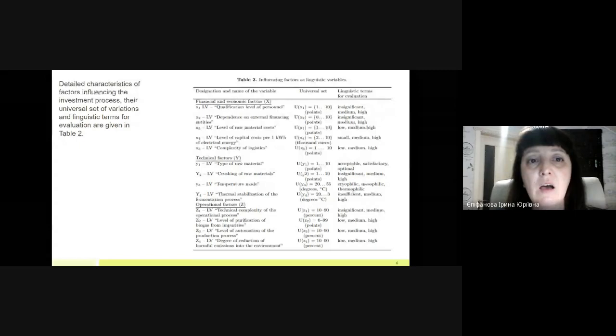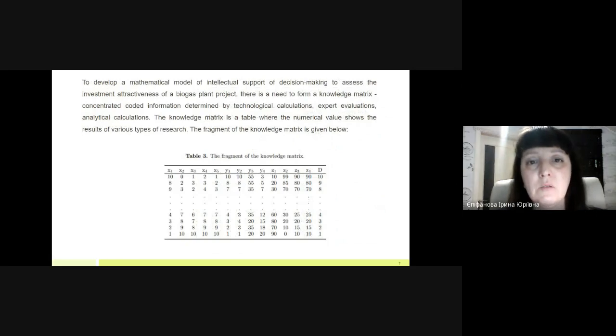Detailed characteristics of factors influencing the investment process, the universal set of variations, and linguistic terms for evaluation are given in the table. To develop a mathematical model of intellectual support for decision making or to assess the investment attractiveness of the biogas plant project, there is a need to form a knowledge matrix concentrating coded information determined by technological calculations, expert valuations, analytical calculations. The knowledge matrix is a table where the numerical value shows the results of various types of research, and a fragment of the knowledge matrix is given below.